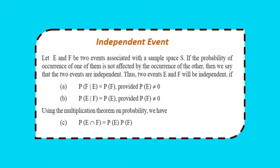Two events E and F will be independent if P(F|E) = P(F), provided P(E) ≠ 0, and P(E|F) = P(E), provided P(F) ≠ 0. Using the multiplication theorem, P(E∩F) = P(E) × P(F). Please pause and note down this point.